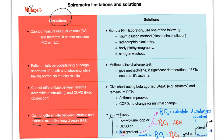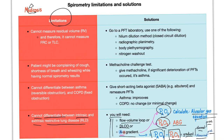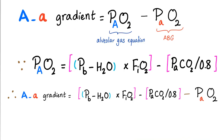You have three solutions to differentiate them: flow-volume loop, DLCO, or the AA gradient. You get the P(A)O2 from the alveolar gas equation and measure the P(a)O2 from the ABG. Subtract the small 'a' from the big 'A' to get the gradient. If it's normal, it's extrinsic because the lung is normal. If it's abnormal, it's intrinsic.